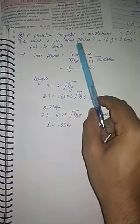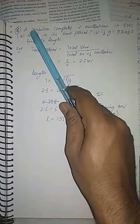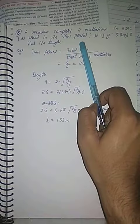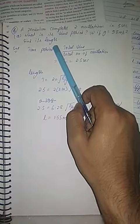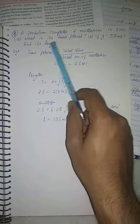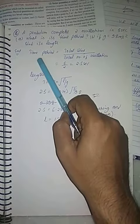A simple pendulum completes two oscillations in five seconds. First part: what is its time period? If g is 9.8 meters per second squared, find the length. Now see, first part you have to calculate the time period. Time period is what?